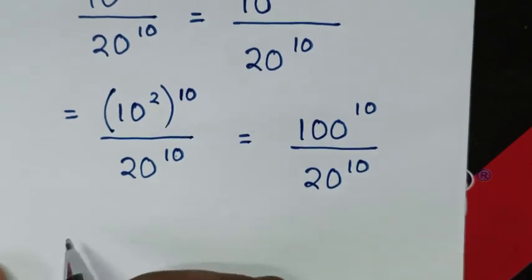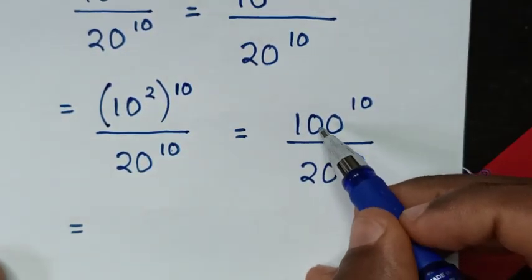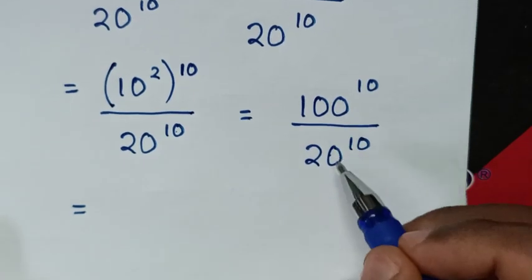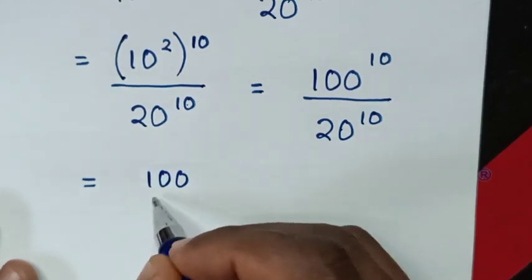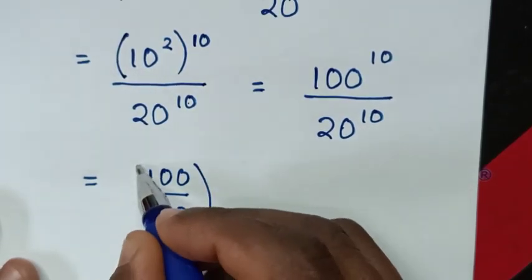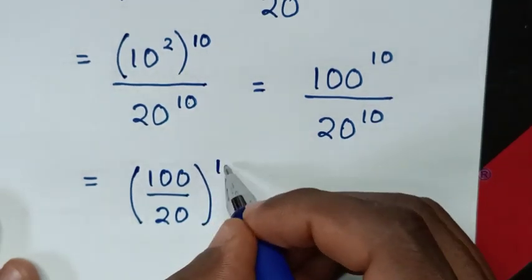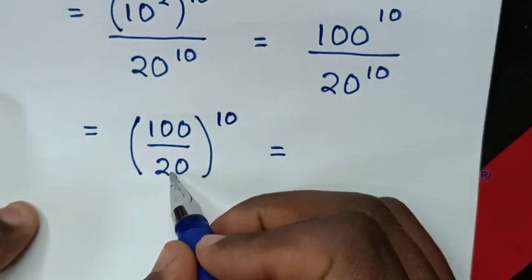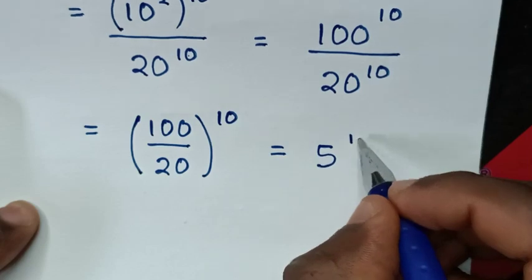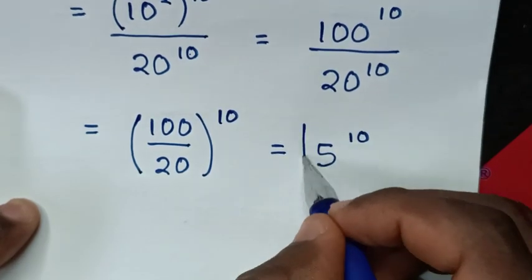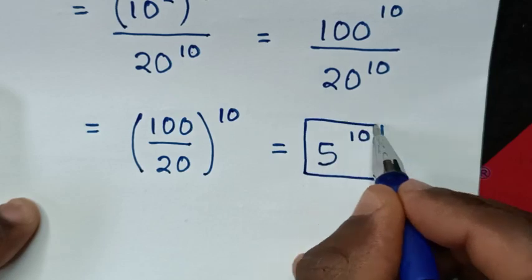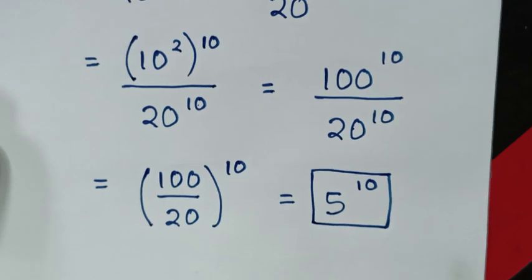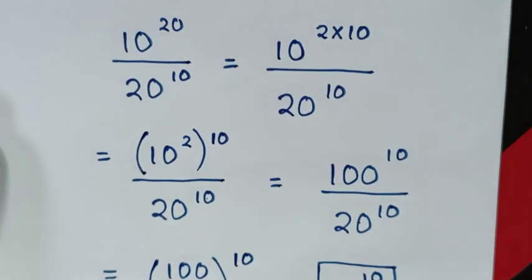Then it will be equal to — as in here, division of exponents with different base but same power — so it will be 100 over 20, then bracket same power, common power of 10. Then it will be equal to 100 divided by 20, which is 5 power of 10. Therefore 5 power of 10 is our final answer. Thank you for watching, don't forget to subscribe, and see you in the next video. Bye bye.